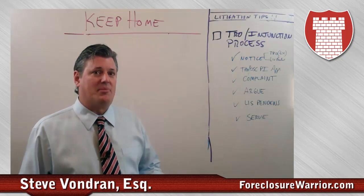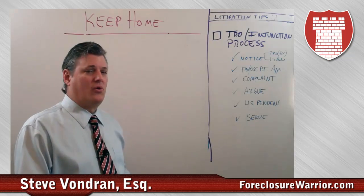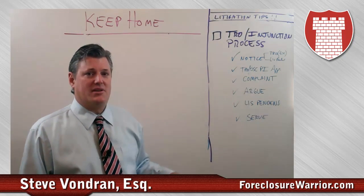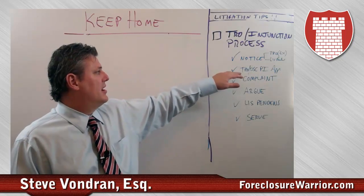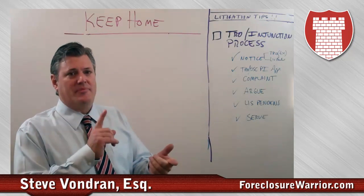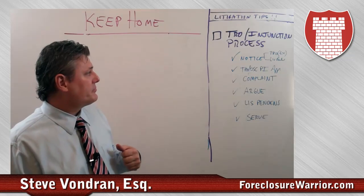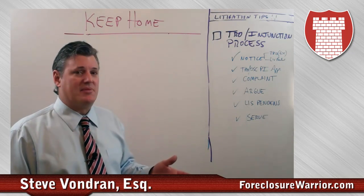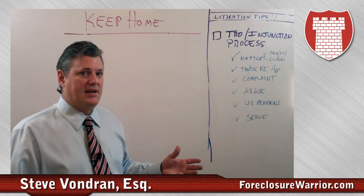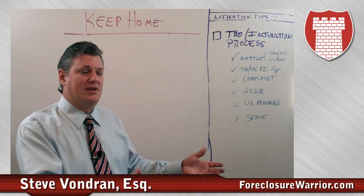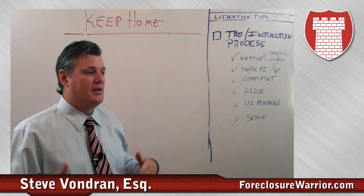The next thing is the actual drafting of the TRO application and the order to show cause, which is regarding a preliminary injunction — why the court should issue a preliminary injunction. This is an application that takes time. There are certain procedural rules, stating the order to show cause before the TRO. You need a proposed order, a declaration for yourself, a declaration of your client. If you're going to do a request for judicial notice — which you probably will if you're using chain-of-title documents — you want a certified copy from the county recorder.